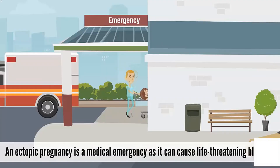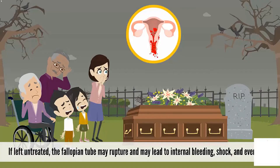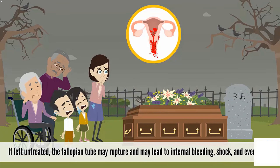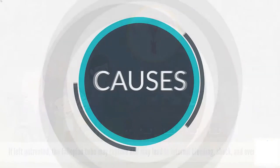An ectopic pregnancy is a medical emergency as it can cause life-threatening bleeding if left untreated. The fallopian tube may rupture and it may lead to internal bleeding, shock, and even death. Next we'll see the causes of ectopic pregnancy.